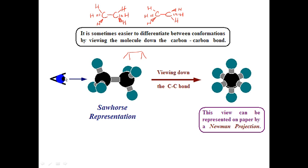The Newman projection is when we take our giant eyeball and look down the carbon-carbon single bond. What we see is the front carbon — we have a hard time seeing the back carbon — and the three hydrogens attached to the front carbon and the three hydrogens attached to the back carbon. This is called the Newman projection, named for Professor Newman who was at Ohio State University. One of their chemistry buildings is named after him.